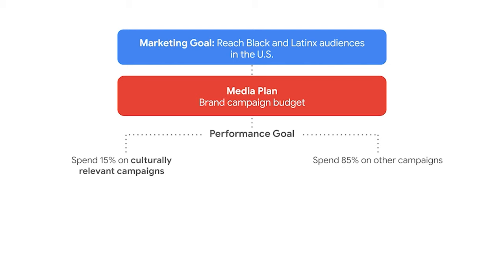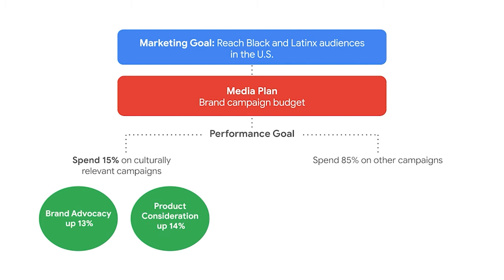Google's media plan called for 15% of Google's brand campaign budget to be spent on culturally relevant media — that was the performance goal. As a result, campaigns were more inclusive. One campaign targeted media events with high viewership among Black audiences and delivered a 13% increase in brand advocacy among Black adults 35 to 49 years old. Another campaign to sponsor the Latin Grammys resulted in a 14% increase in Spanish-speaking adults 18 to 49 years old likely to consider purchasing a Pixel 5 phone.